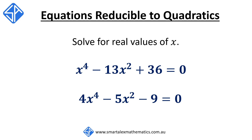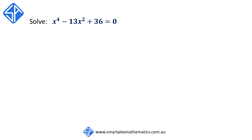In this video, we're going to look at how to solve higher order equations that can be reduced to a quadratic equation. For our first example, we're going to solve x to the 4 minus 13x squared plus 36 is equal to 0.